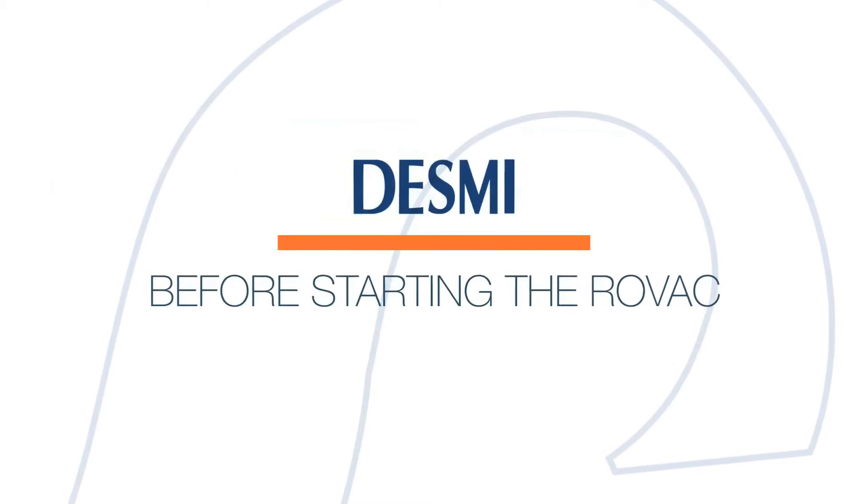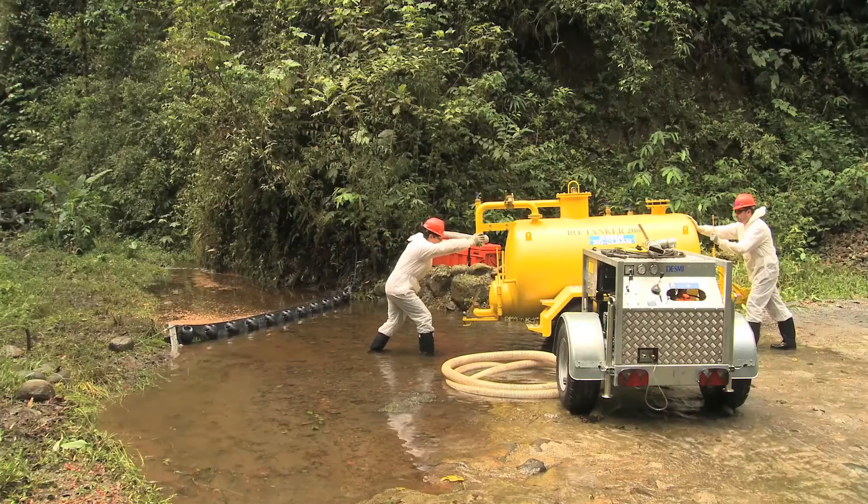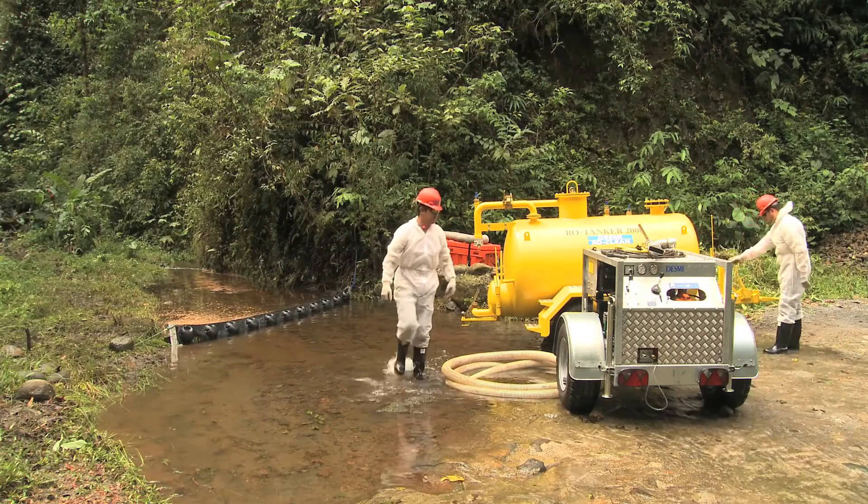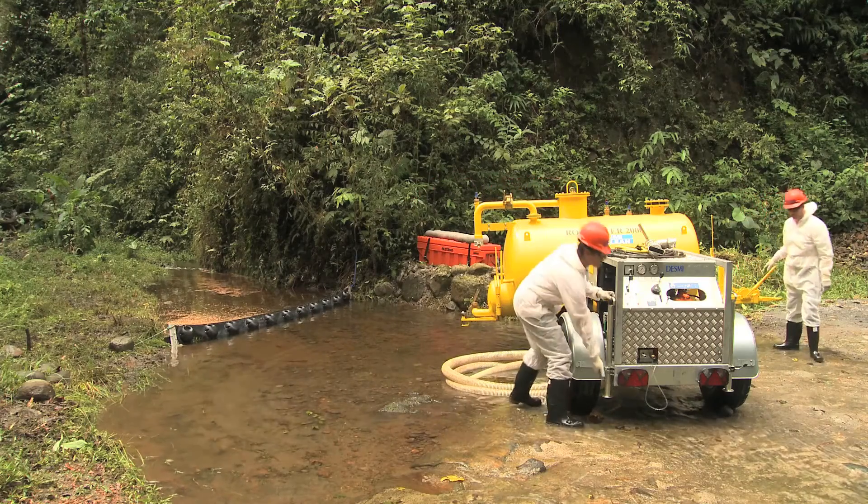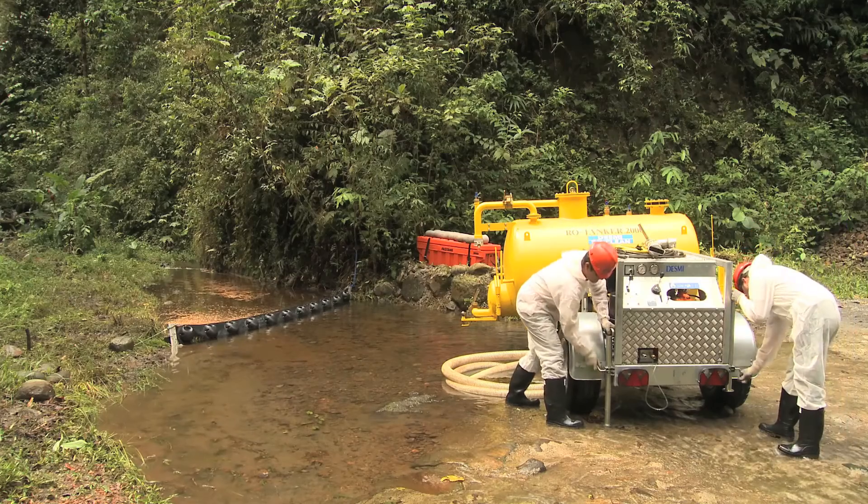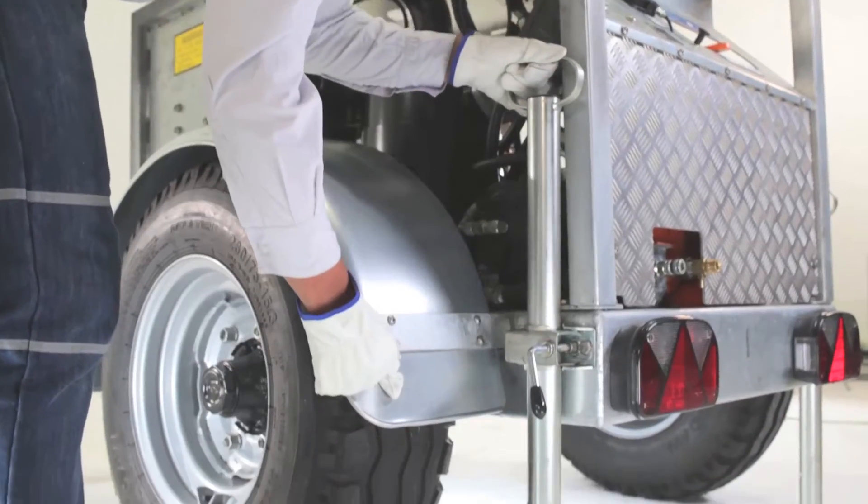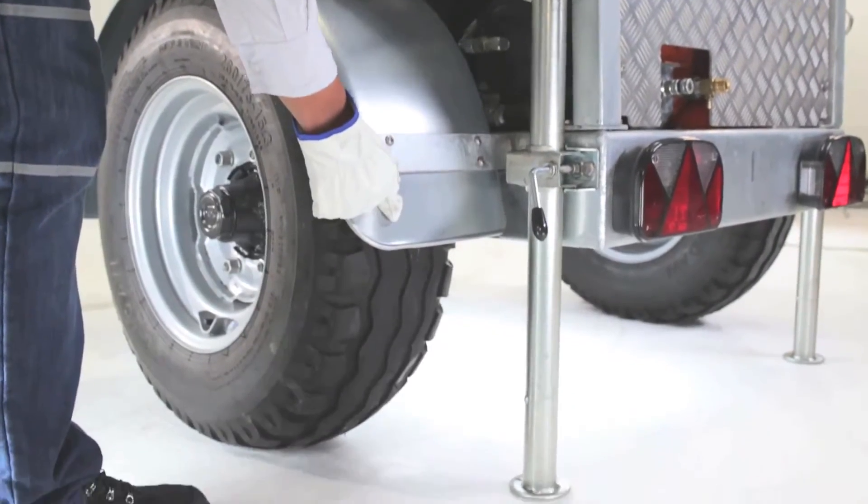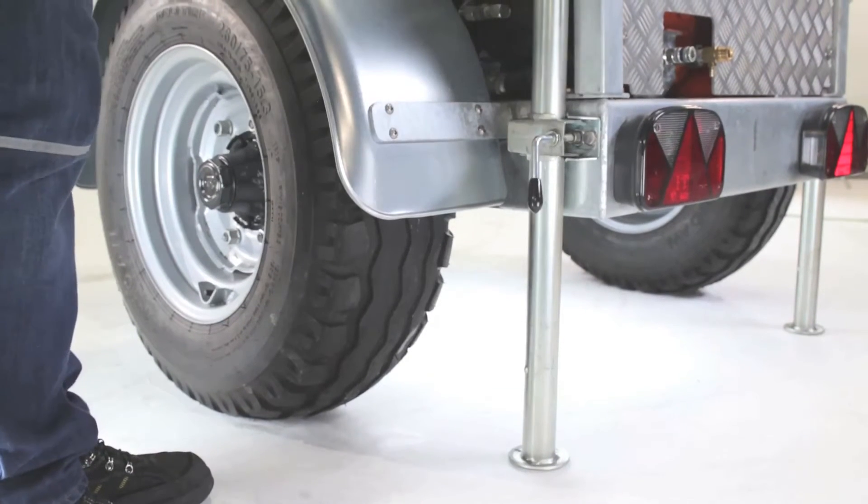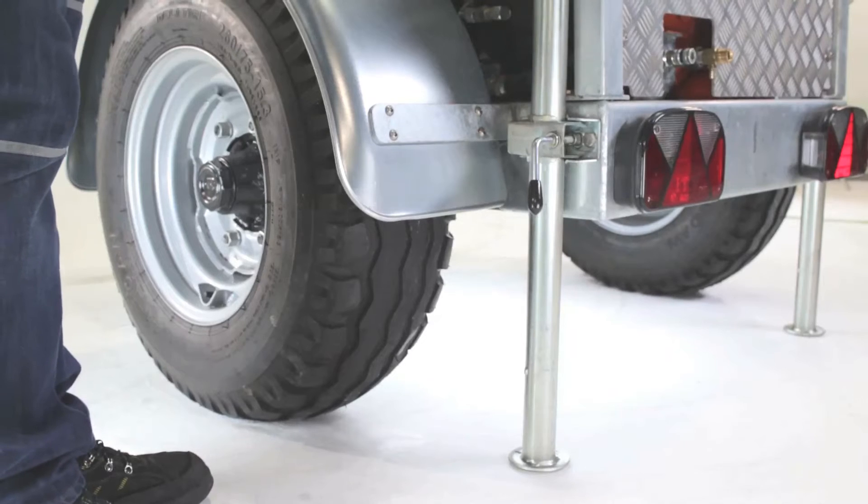Before starting the ROVAC, stabilize the units. Ensure all tires of the ROVAC and RO tanker are touching the ground before loading the tank. Always make sure that nobody is in the danger area and that there are no moving parts on engines or machinery. Always operate the system located in front of the control panel. Keep a safe distance.